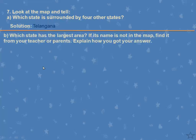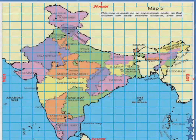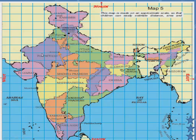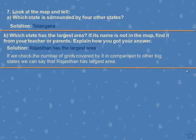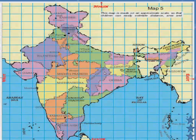Next question: Which state has the largest area? If its name is not on the map, find it out from your teacher or parents and explain how you got the answer. Rajasthan has the largest area. You can check on Google as well. Using the grid-based area calculation method — where more than half a box counts as one and less than half is left — if you calculate, Rajasthan covers the most grids compared to other big states, confirming it has the largest area.